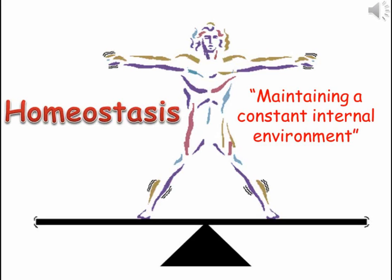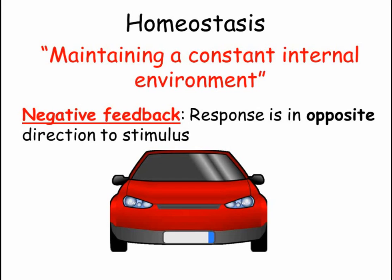In this video, we'll look at three conditions that humans control: temperature, sugar levels, and water levels. We'll look at the importance of controlling each of these, as well as how the body keeps each factor constant. The thing that all of these have in common is that they work by negative feedback. This means that the body produces a response in the opposite direction to the stimulus, bringing levels back to normal.